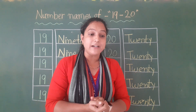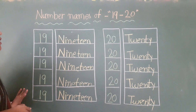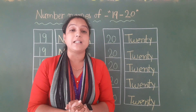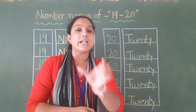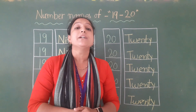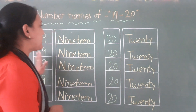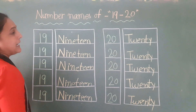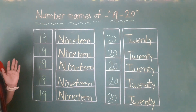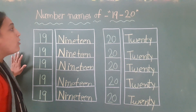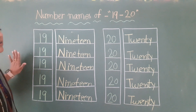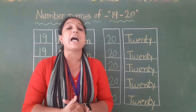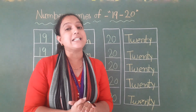So, aapko kya karna hai? Aapne 19 aur 20 ka spelling apni math ki notebook ke andar likhna hai. Ek page mein 19 ka aur doosre page pe 20 ka — bolte jaana hai aur likhte jaana hai. Bol bol ke likhoge baar baar toh aapko spelling bahut jaldi yaad ho jaayegi. Bol ke hi likhna hai — bolte jao aur likhte jao, isse aapki likhne ki practice aur yaad karna aapke liye easy ho jaayega.